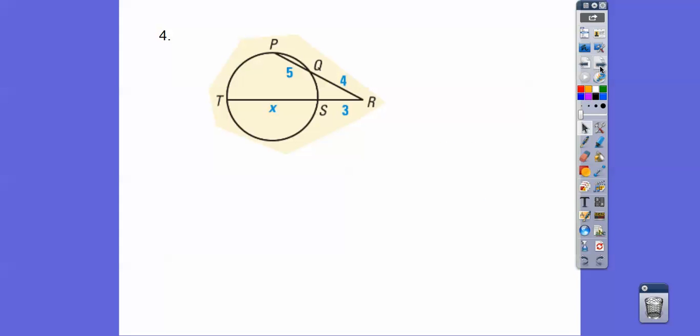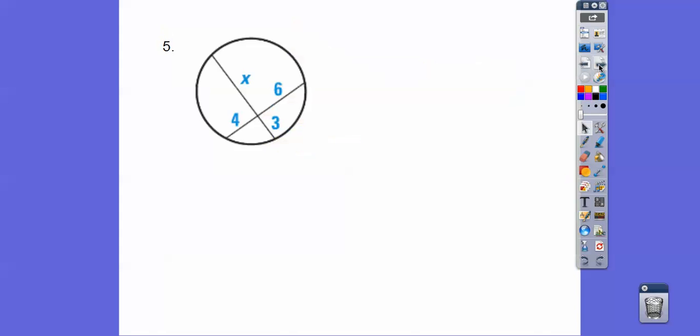This one. So, this is outer times whole equals outer times whole. So, the whole is X plus 3. The whole on this one is 4 plus 5 which is 9. So, outer times whole. Outer times whole. Distribute the 3 through. Subtract 9. Divide by 3. X equals 9.